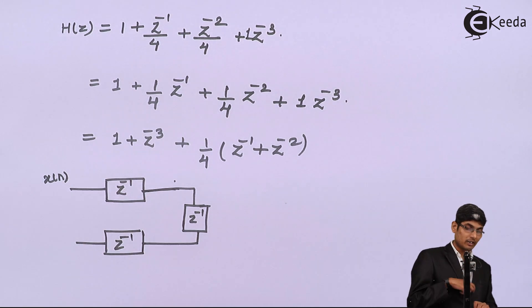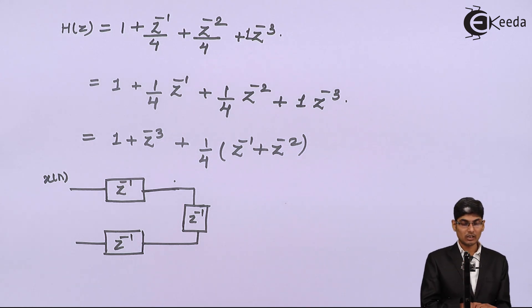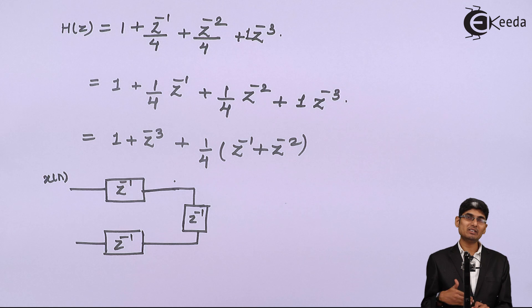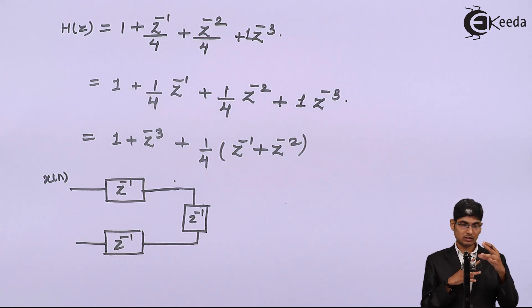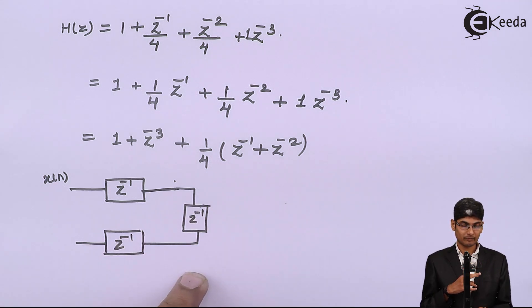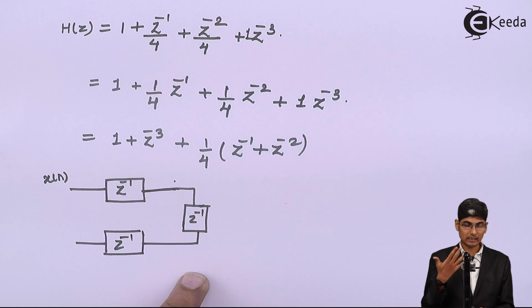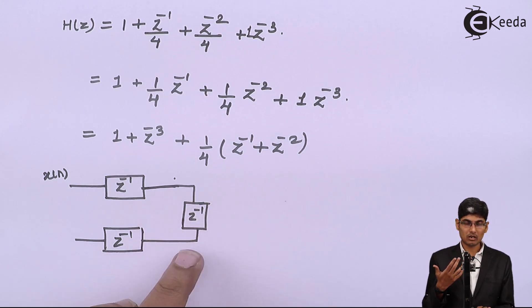So now remember that whenever the order is odd, the number of elements will be odd. Then you will have the boxes to be just below each other. There will be no separate box like this. But when the order is even, that means let us say there are 4 elements, then there will be a separate block like this.